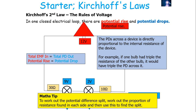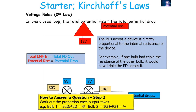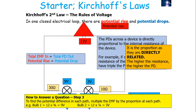To work out how this split would be, you work out the proportion of resistance found on each side and use that to find the split. You work out the total resistance — in this case, 30 plus 10 equals 40 ohms. You then find the proportion each output will take: the bulb on the left will take 30 out of 40, or three quarters, and the bulb on the right will take 10 out of 40, or one quarter. To find the potential difference in each output, multiply the EMF by the proportion at each output.